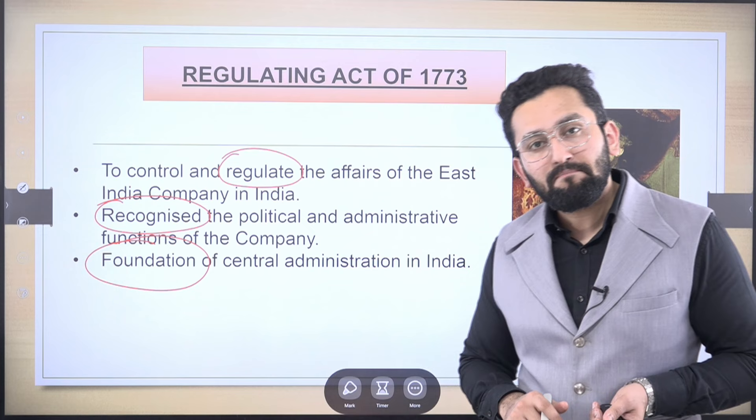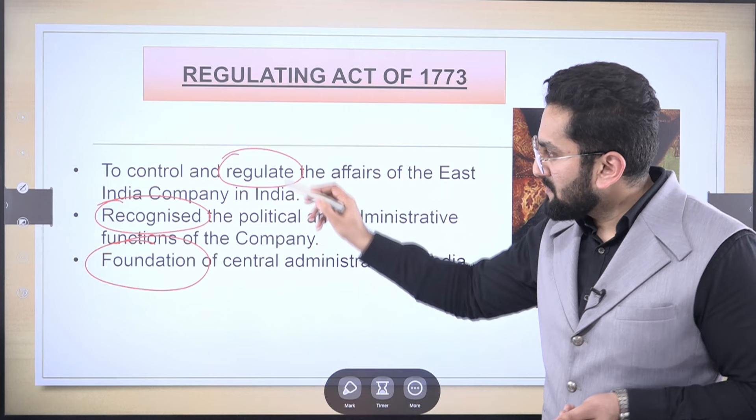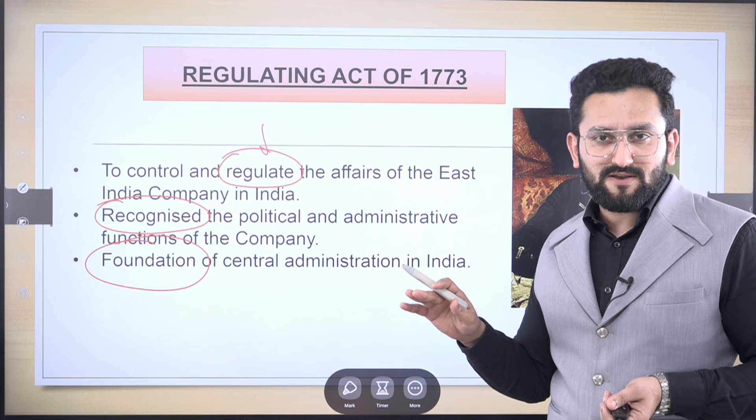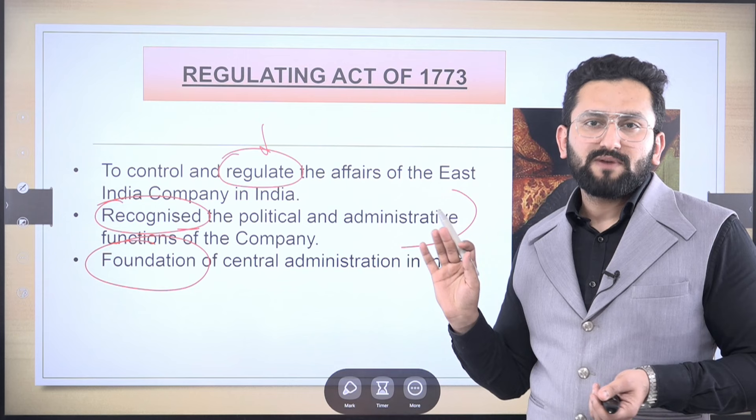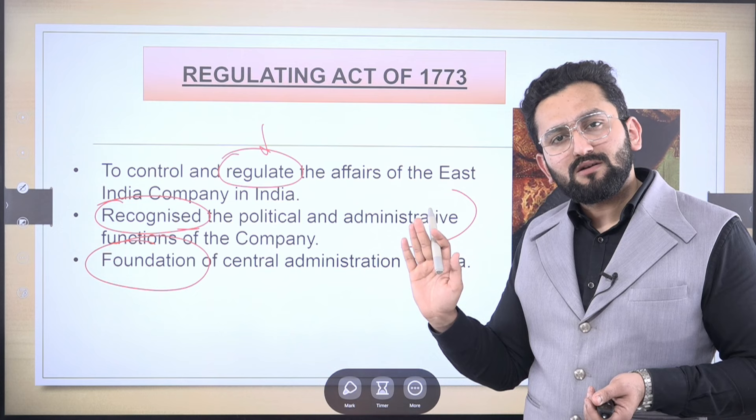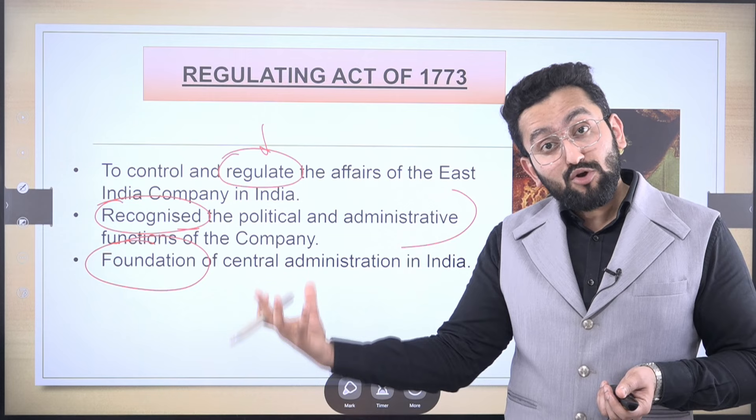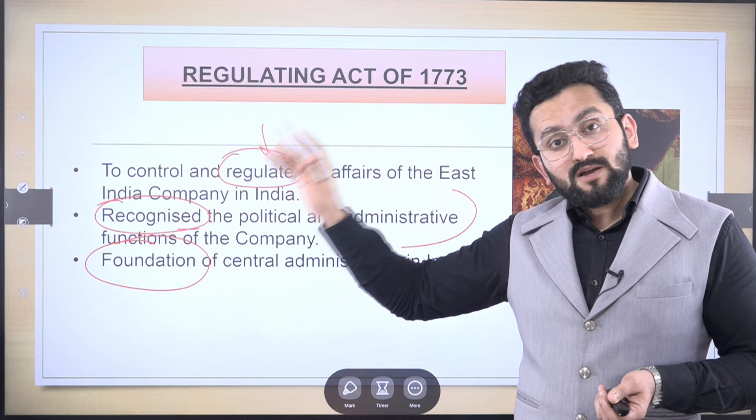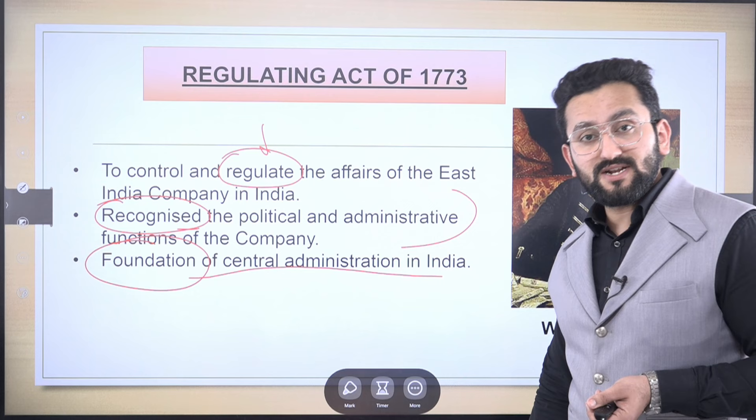There were three prominent objectives of the Regulating Act 1773. One was to regulate the affairs, because there was a lot of corruption. Second, to recognize the political and administrative rise of the company — by that time it was clear the company was having political power and Diwani rights. Third, to lay the foundation of central administration in India. The British Empire wanted some kind of centralization — one point of contact having more power than other provinces like Bombay and Madras.